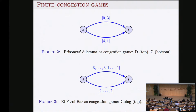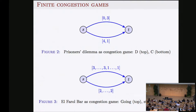Nobody switches because if you switch from defecting you'd pay four. That's why it's a Nash equilibrium. Another example is the El Farol bar game: if at most 60% of the population goes to the bar they're happy; if more than 60% go it becomes crowded and they don't like it. Going to the bar gives happiness three up to some point, then drops to one when crowded; staying home gives happiness two regardless of others.